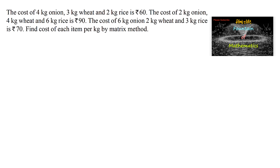The cost of 4 kg onion, 3 kg wheat and 2 kg rice is Rs. 60. The cost of 2 kg onion, 4 kg wheat and 6 kg rice is Rs. 90. And the cost of 6 kg onion, 2 kg wheat and 3 kg rice is Rs. 70.